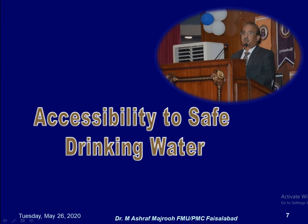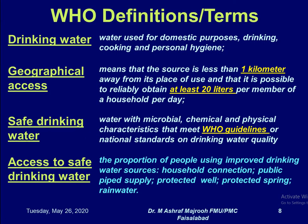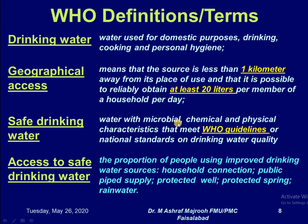The WHO has defined certain terms related to water. Drinking water means water used for domestic purposes: drinking, cooking, and personal hygiene. Geographical access is defined by WHO as a source less than 1 km away from the place of use, where it is possible to reliably obtain at least 20 liters per member of household per day. Safe drinking water is water with microbial, chemical and physical characteristics that meet the WHO guidelines or national standards.